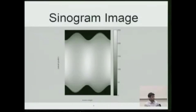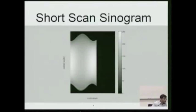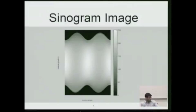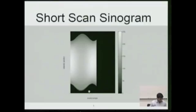Here's an example of a sinogram — a complete sinogram. On the vertical axis is the detector position, on the horizontal axis is the source angle, and the intensity is the measured data for each detector position at each source angle. But what if we have a case where we don't rotate the gantry a complete 360 degrees? In this figure the horizontal axis goes from 0 to 360, but in this particular case we've covered projection angles from only 0 to 10 degrees. Can we still reconstruct the image?